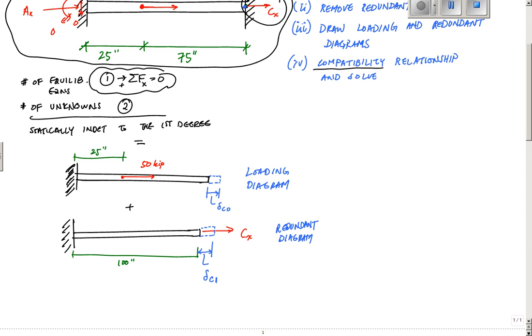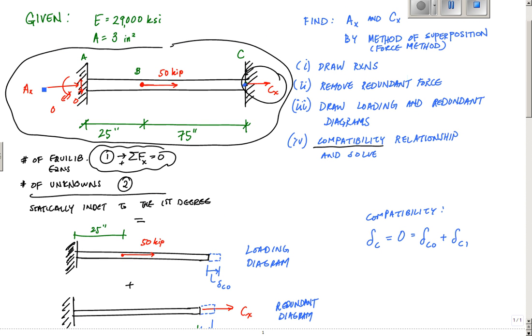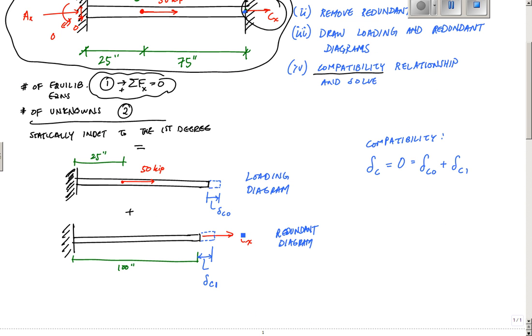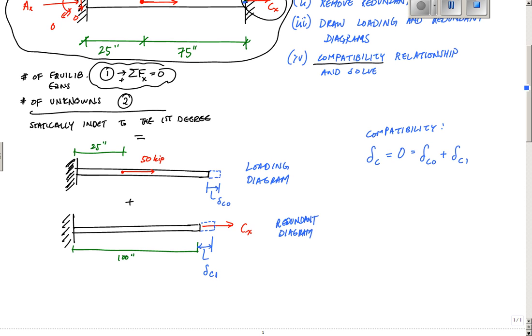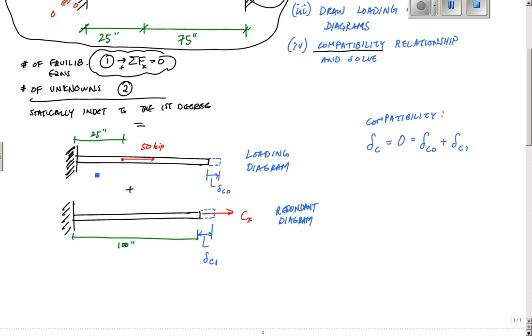So my redundant, my first redundant and my only redundant. And the compatibility relationship, my compatibility relationship is that here I have delta C, which is equal to zero. I have no deformation at point C, is equal to delta C zero plus delta C one. Delta C zero equals, plus delta C one, which is great. One thing to note here is since, one thing to make sure you stay consistent with is if you draw your reactions here as going to the right, AX and CX going to the right, you also want to make sure your redundant also goes to the right. You don't want to suddenly swap. That's going to mess things up. You're going to get a negative sign that you don't need. It's just going to cause problems. And you're going to be like, why is my answer different than what it's supposed to be?